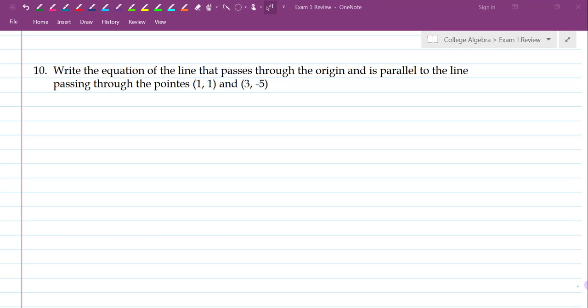This is problem 10 of the review. It says write the equation of the line that passes through the origin and is parallel to the line passing through the points - oops, editing issue - 1, 1 and 3, negative 5.